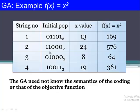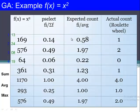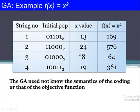This chromosome represents the number 13. The second solution represents 24, the third represents 8, and the fourth represents 19. All selected solutions are presented in binary form using five bits. So initially we have selected the four numbers 13, 24, 8, and 19 — these are called chromosomes, and this is our initial population, selected randomly.